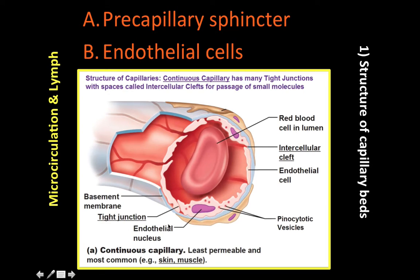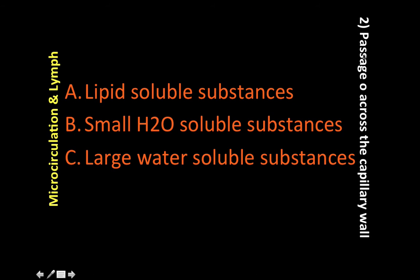There are also tight junctions between the endothelial cells, and pinocytic vesicles will be discussed in the next section. Moving on to the passage of substances across the capillary wall: lipid-soluble substances cross the membrane of capillary endothelial cells by simple diffusion — no energy required. Examples of lipid-soluble substances are oxygen and CO2.